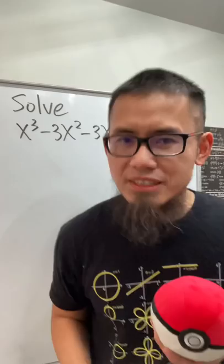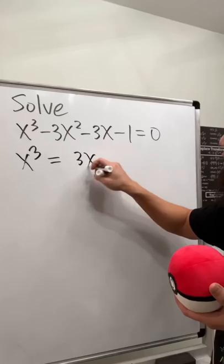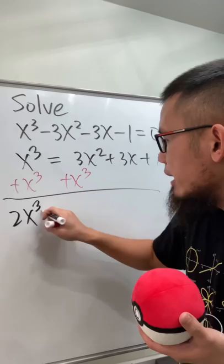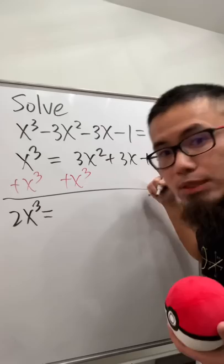Now let's solve a cubic equation. Move terms to get x³ = 3x² + 3x + 1. Add x³ to both sides: the left becomes 2x³, and the right is x³ + 3x² + 3x + 1, which is exactly (x+1)³.